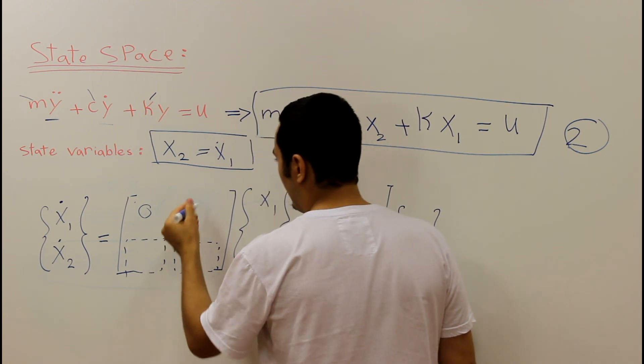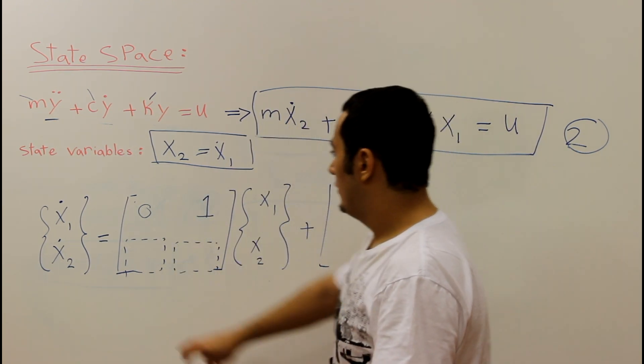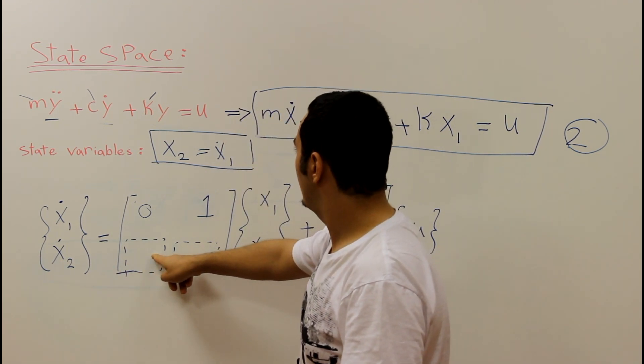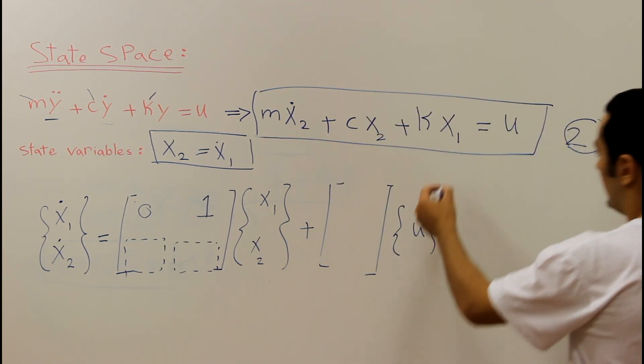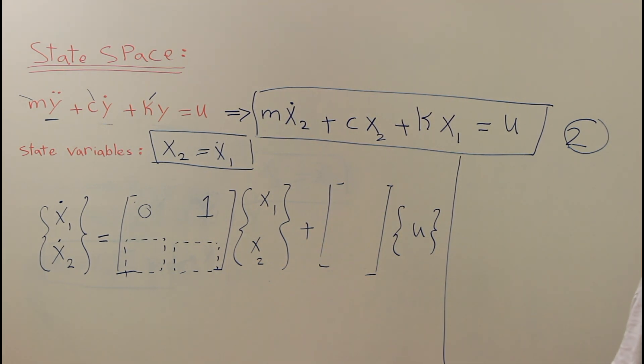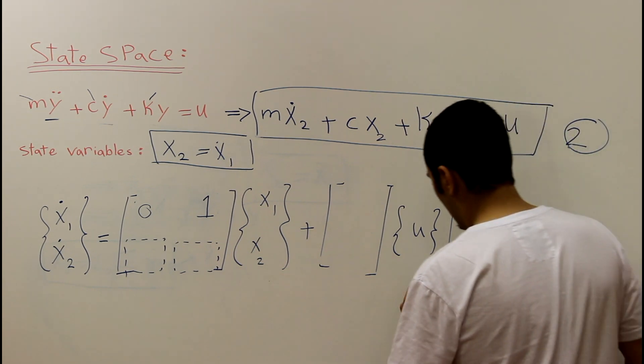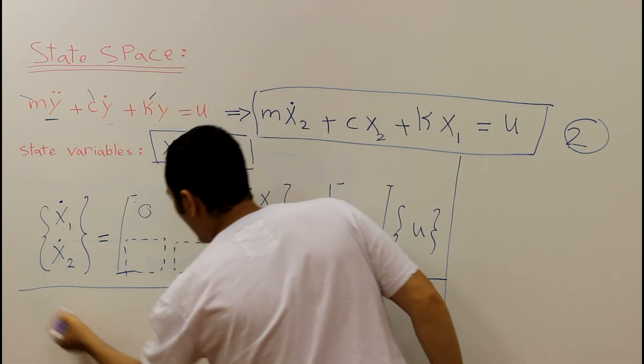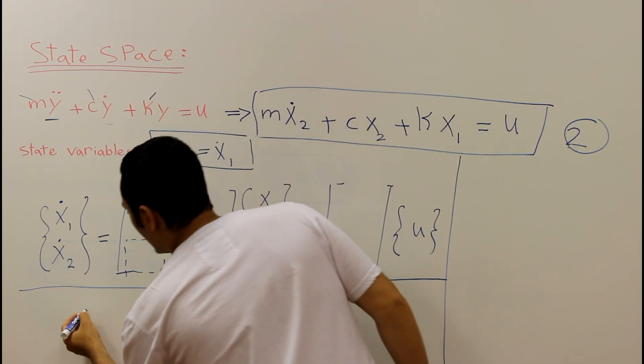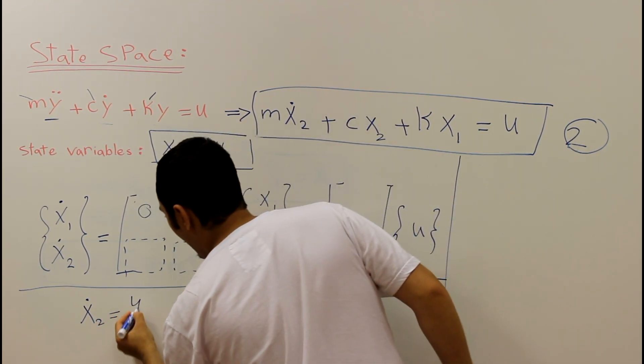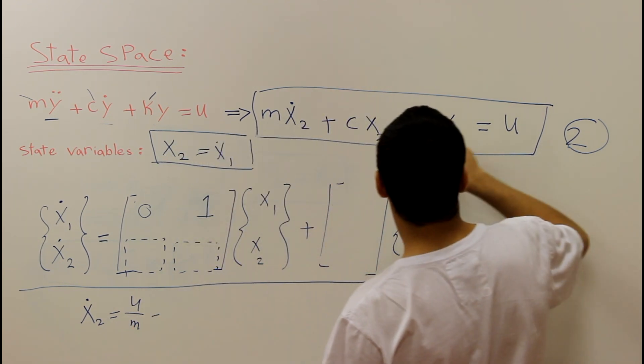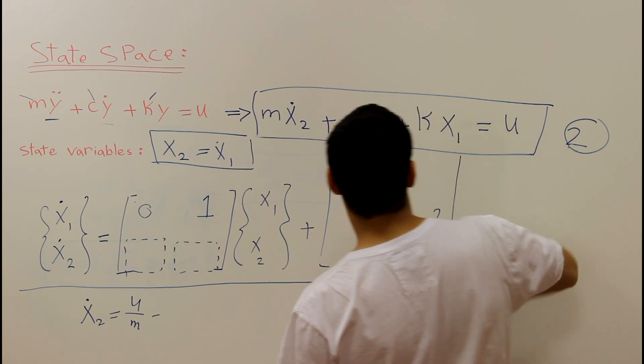For the second equation, x2 dot in terms of x1, that means we need to solve for x2 dot, which means that we are going to go ahead and solve for x2 dot. So x2 dot equal u divided by m minus k divided by m x1